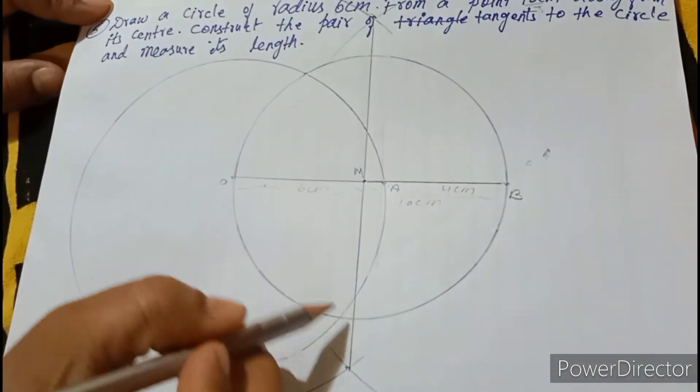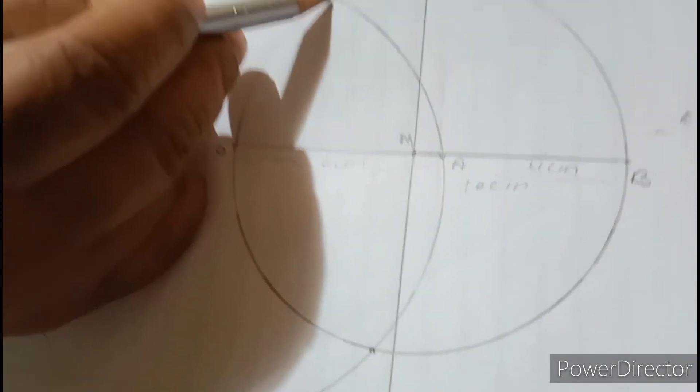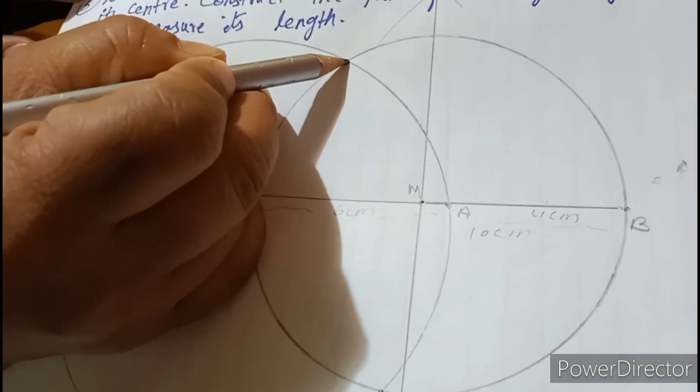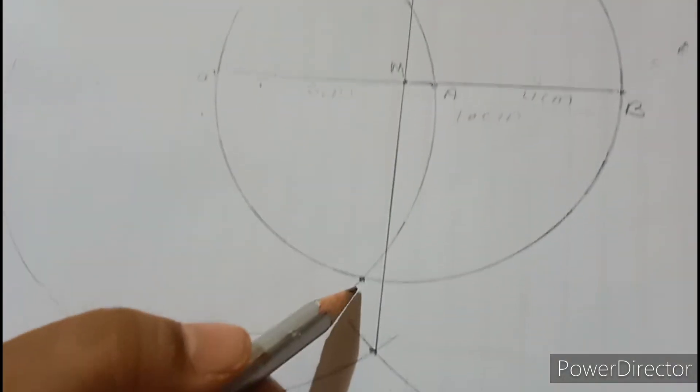Now, closure. Show the closure. These two points. See? One point is here and above. Here it is a one point. So, let it be T1. This be T2. T1, T2 is what? Tangents.